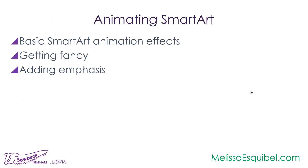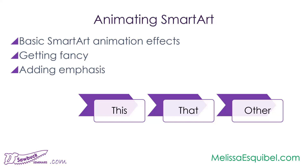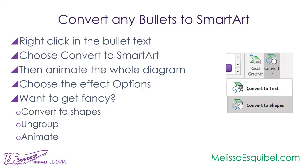Now let's talk about animating smart art. If you haven't worked with smart art yet, we'll set up some basic smart art and show you how to get one piece of your info diagram on screen at a time. One approach: right-click a set of bullets, convert to smart art, animate the entire diagram, and then use effect options to bring it in one by one rather than all at once.